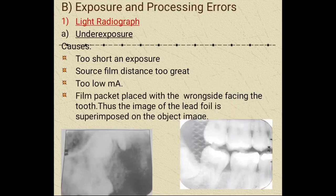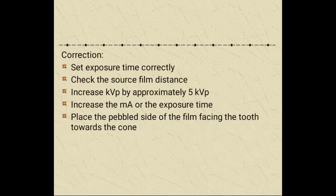Moving on to exposure and processing errors: a light radiograph is due to under-exposure. Causes include too short an exposure, source-film distance is too great, too low milliampere, or the film packet placed with the wrong side facing the tooth — causing the image of the lead foil to be superimposed on the object image. We can correct it by setting the correct exposure time, checking the source-film distance, increasing kVp by approximately 5, increasing milliampere, and placing the pebble side of the film facing the tooth towards the cone.